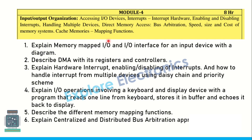Coming to module 4 — input and output organization. Explain memory-mapped I/O and the I/O interface for an input device with a diagram. Explain DMA with registers and controllers — this is very important. Explain hardware interrupts, enabling and disabling of interrupts, how to handle interrupts, and the interrupt service routine. Different schemes like daisy chain priority scheme are also very important. Explain I/O operations involving a keyboard and display — a program that reads one line from keyboard, stores it in a buffer, and echoes it back to the display — as given in the prescribed textbook. Describe different memory mapping functions and explain bus arbitration approaches, both centralized and distributed.